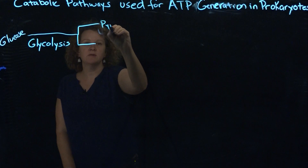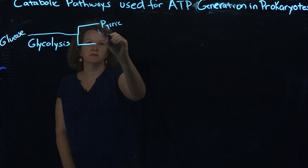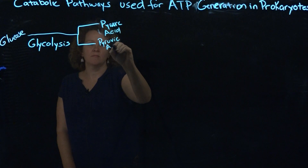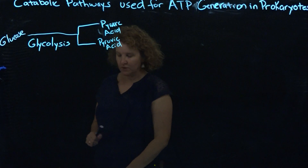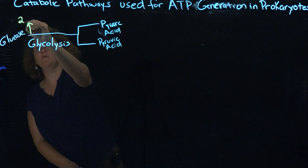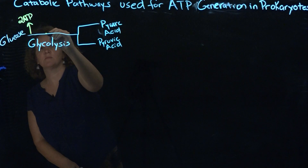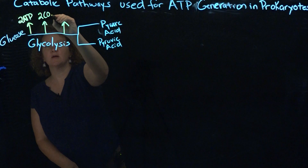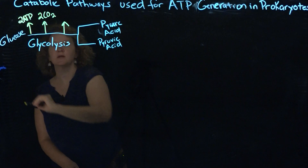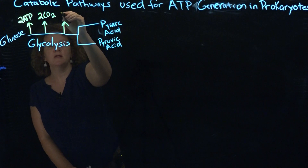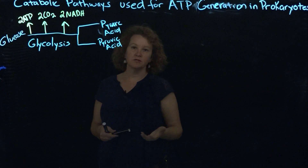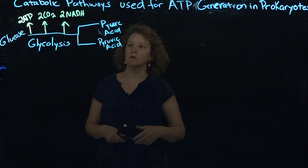As we go through things like Krebs, keep in mind it's circling around twice because we have two pyruvic acids. During glycolysis you're going to make two ATPs net — you actually synthesize four but you need two to get it started. You also have some waste here: carbon dioxide, and that carbon is coming from the carbon in glucose. And then you have two molecules of your electron carrier, which is NADH, and that's going to go to the electron transport chain if this particular organism has one.